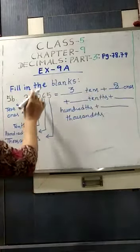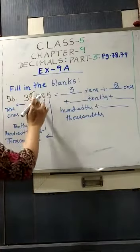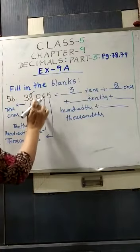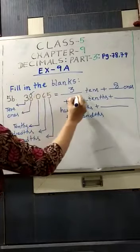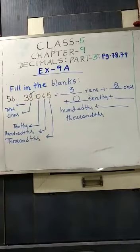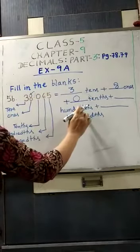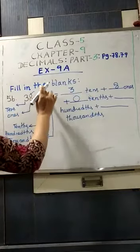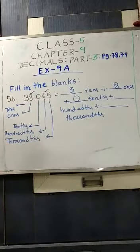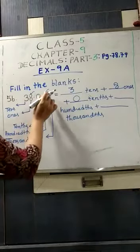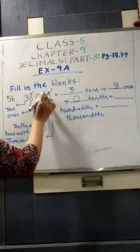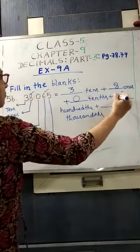Plus, tenths. Which digit is there in tenths place? After decimal, first digit. That is 0. We will put down 0 over there. Then, hundredths. What is there? In hundredths place, that is 6. Second position after decimal point. So, you will put down 6 over there.